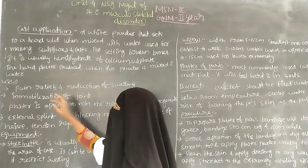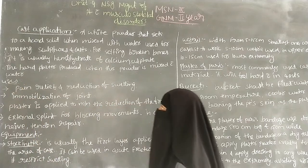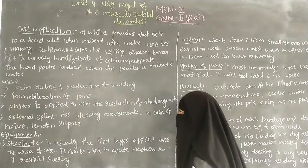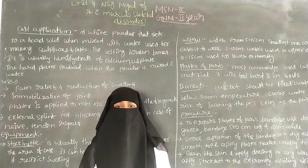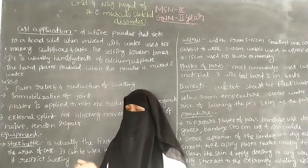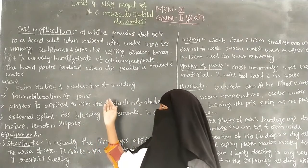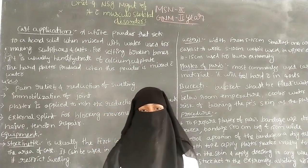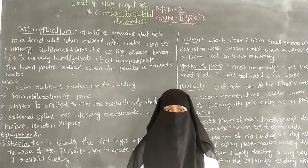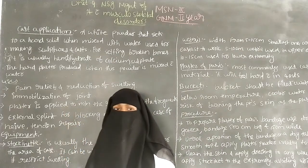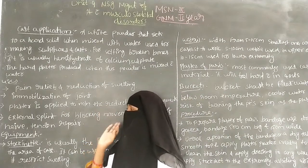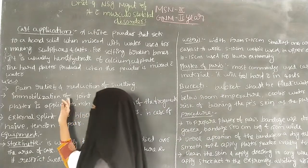What are the uses for the cast application? The first use is pain relief and reduction of swelling. The cast can be applied to the affected limb, ligaments, or joints. By using this cast, we can reduce the pain of the patient and also reduce the swelling. The cast application is a temporary treatment for the affected bone, providing temporary relief for the patient.